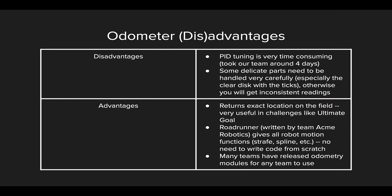Here are the advantages and disadvantages of using an odometer. One disadvantage is that the PID tuning for the four motors used for Mecanum wheels is very, very time consuming — it took our team around four days since we were using it for the first time. But if you tune it once, you don't have to tune it again; the initial tuning process just takes a long time. Also, there are some very delicate parts that have to be handled carefully. For example, that disc with the ticks on it must be handled carefully and cannot have any scratches — otherwise you'll get inconsistent or incorrect readings, which can really affect your navigation.